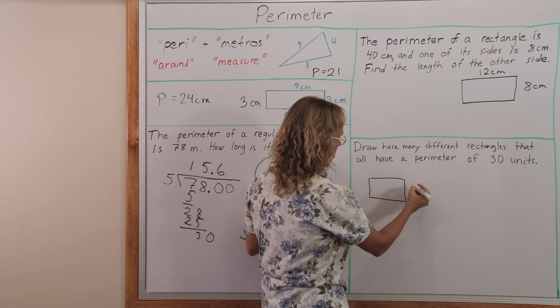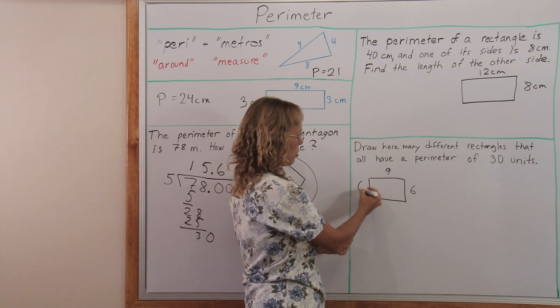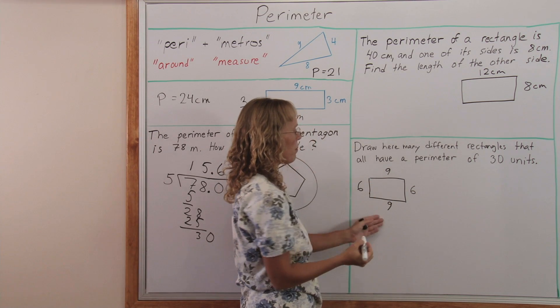For example, maybe I'll take 9 and 6. 9 and 6 is 15 and then the other two sides are of course 9 and 6, total 30.